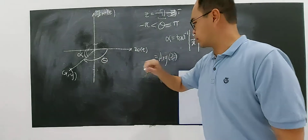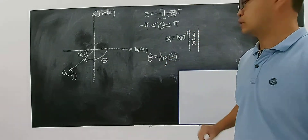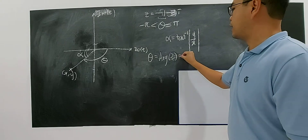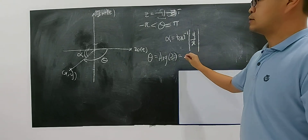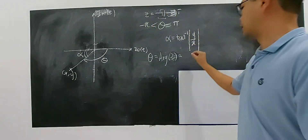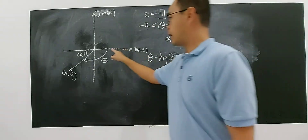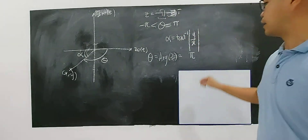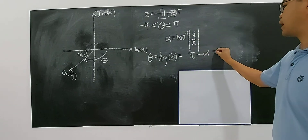The third quadrant will be very tricky if you are not very alert. Theta is the argument of z. Usually, students will say: take 180 — the pi — and pi minus the arctangent. It seems like correct.